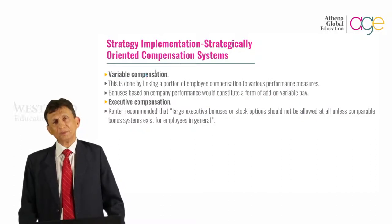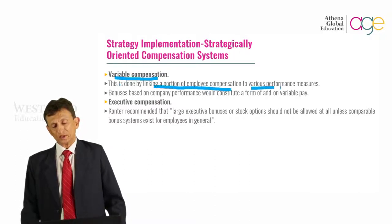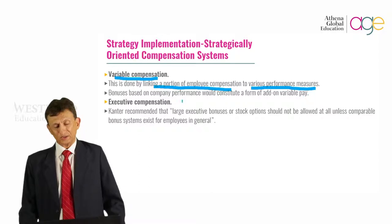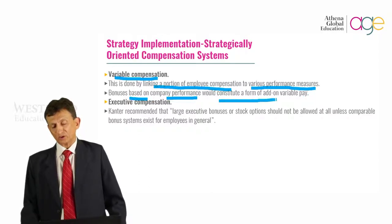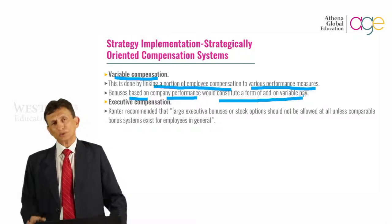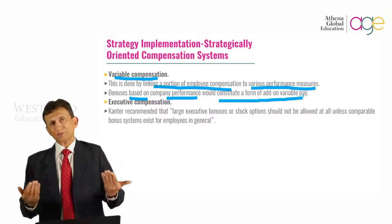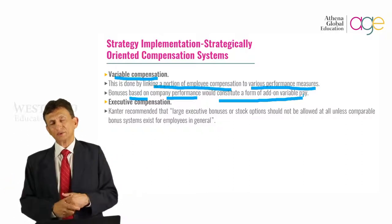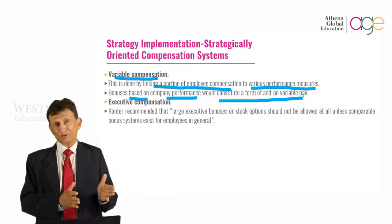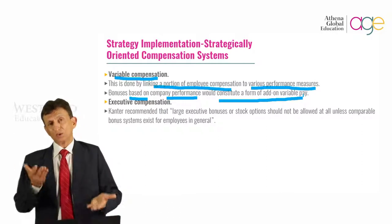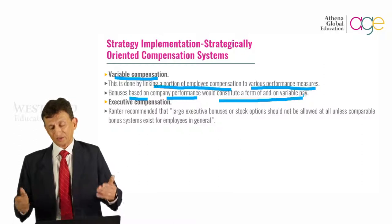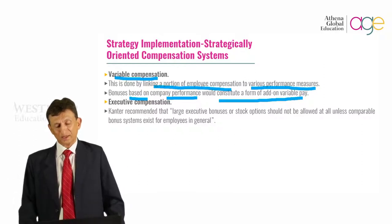Another kind of pay is variable compensation. This is done by linking a portion of employee compensation to various employee performance measures. Bonuses based on company performance would constitute add-on variable pay. If the company does well, it shares its profits with employees — that is the variable compensation — and depending on the performance of the company, you will get a variable allowance in addition to your actual pay.